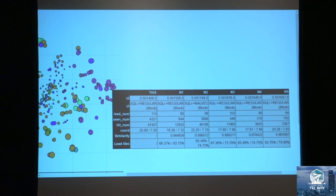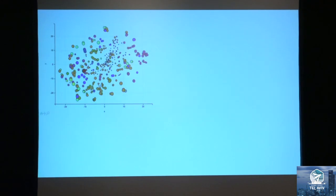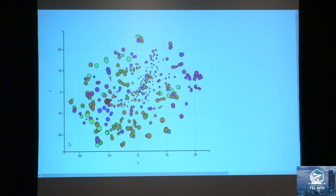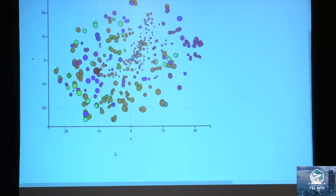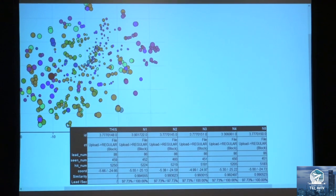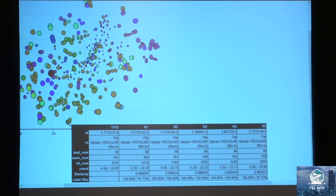You can see the SQL injection cluster clearly. Another group — for example these guys here — are file upload rules, and we can see they tend to come together. This is not very surprising. This is exactly the picture we expected: when someone wants to do file upload and tries different things, these different things are captured by different WAF rules. We can see numbers here that are even more significant.